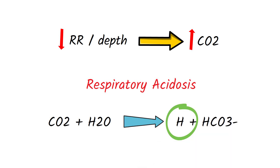Similarly, an increase in the rate or depth of respirations can remove additional carbon dioxide, decreasing the hydrogen ion concentration in the blood. This is called respiratory alkalosis.